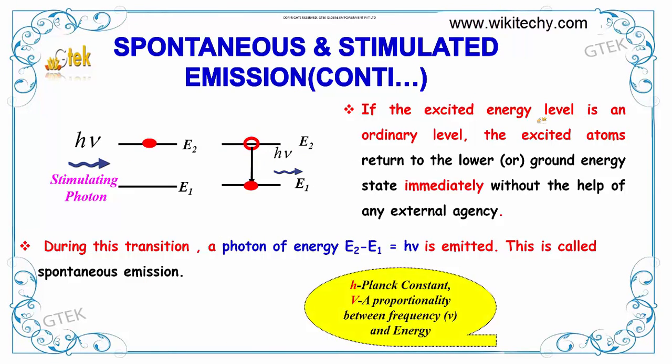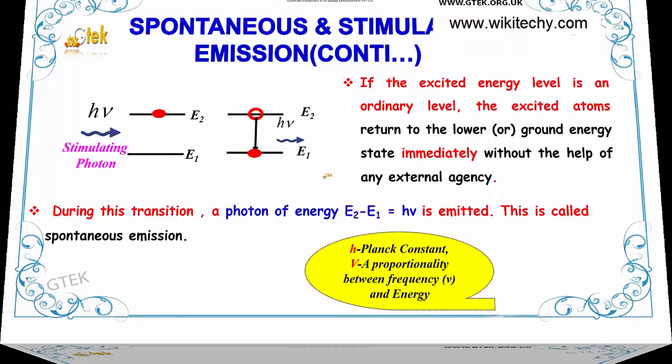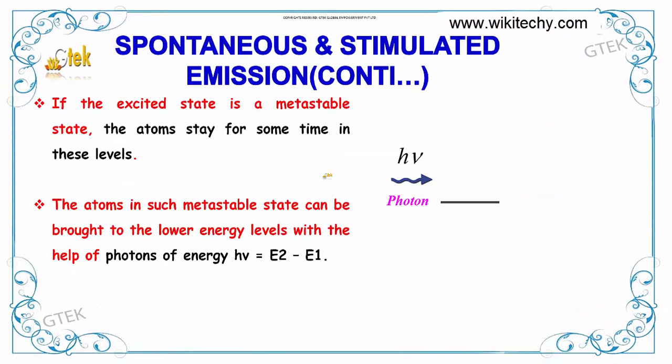Now if the excited energy level is an ordinary level, the excited atoms return to the lower or ground energy state immediately without any help of external agency and an h nu photon of energy is emitted. This is called spontaneous emission. Previously you have seen about absorption. This one is absorption, this one is emission.